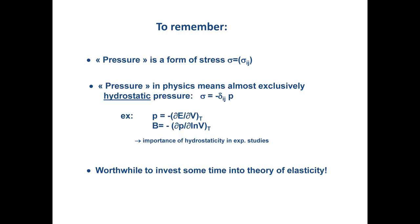What should you take away from this? What we call pressure in everyday life is actually a more complicated object — a 3×3 tensor called stress. Pressure in physics means almost exclusively hydrostatic pressure, meaning a stress tensor of that specific diagonal form. For example, our theory colleagues determine pressure by taking the partial derivative of energy with respect to volume — this is a thermodynamic relationship, and the resulting pressure is necessarily hydrostatic. So if you measure something and want to compare with theory, you have to do it under hydrostatic conditions. The definition of the bulk modulus also implicitly assumes hydrostatic pressure.